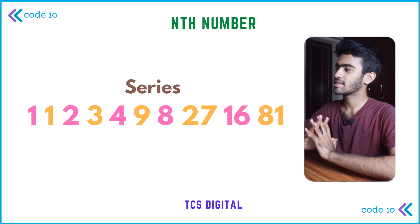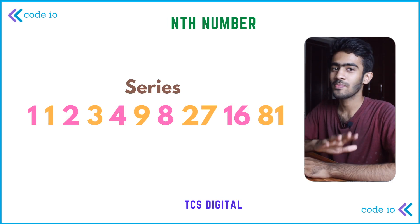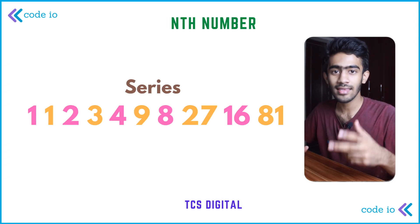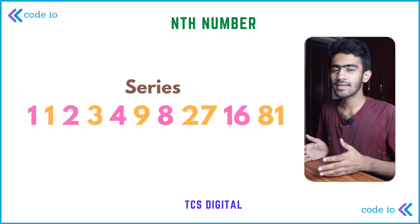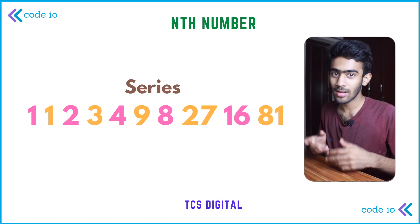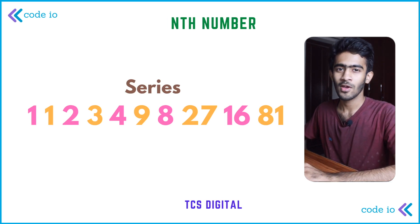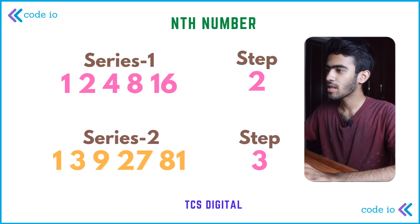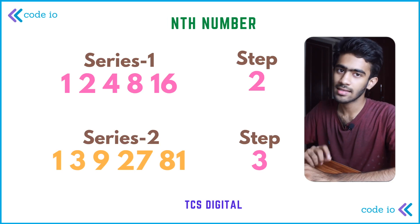We will use colors to observe the pattern. The pink color elements are: 2, 4, 8, 16 — these are powers of 2. The other elements are: 1, 3, 9, 27, 81 — these are powers of 3. The step value for the pink series is 2, and the step value for the other series is 3.